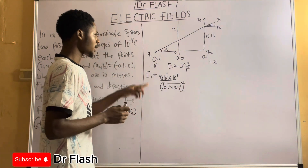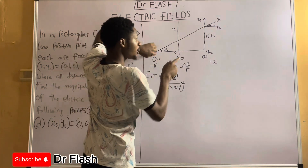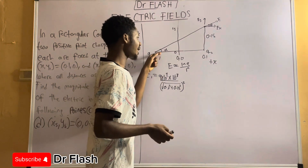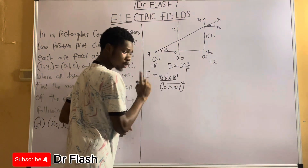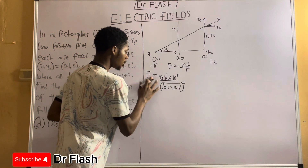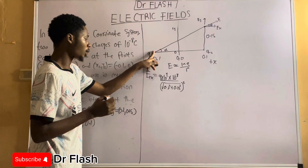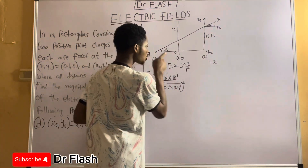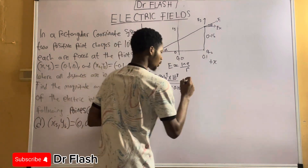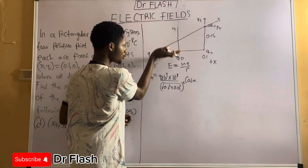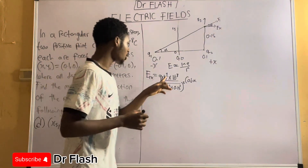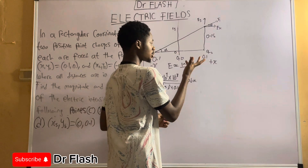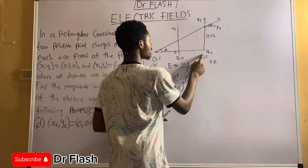We are not done, because q1 has an electric field inclined at angle alpha. For vectors inclined to the horizontal or vertical, we must resolve to the x and y axes. So instead of writing E1, I write E1x — the component of E1 along the x-axis. To get the horizontal component, we resolve using cosine of alpha.